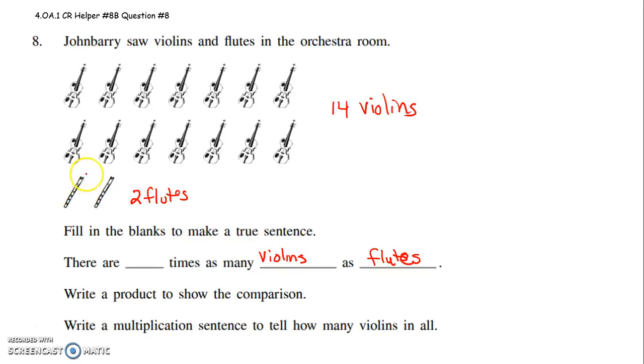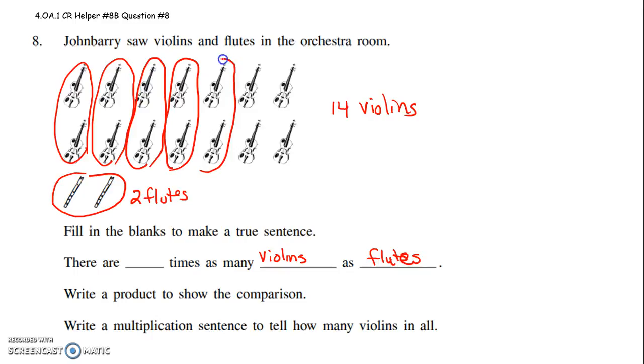And to see how many times more, if you know you have a group of 2 flutes, the real question is, how many groups of 2 violins do you have? 1, 2, 3, 4, 5, 6, 7.